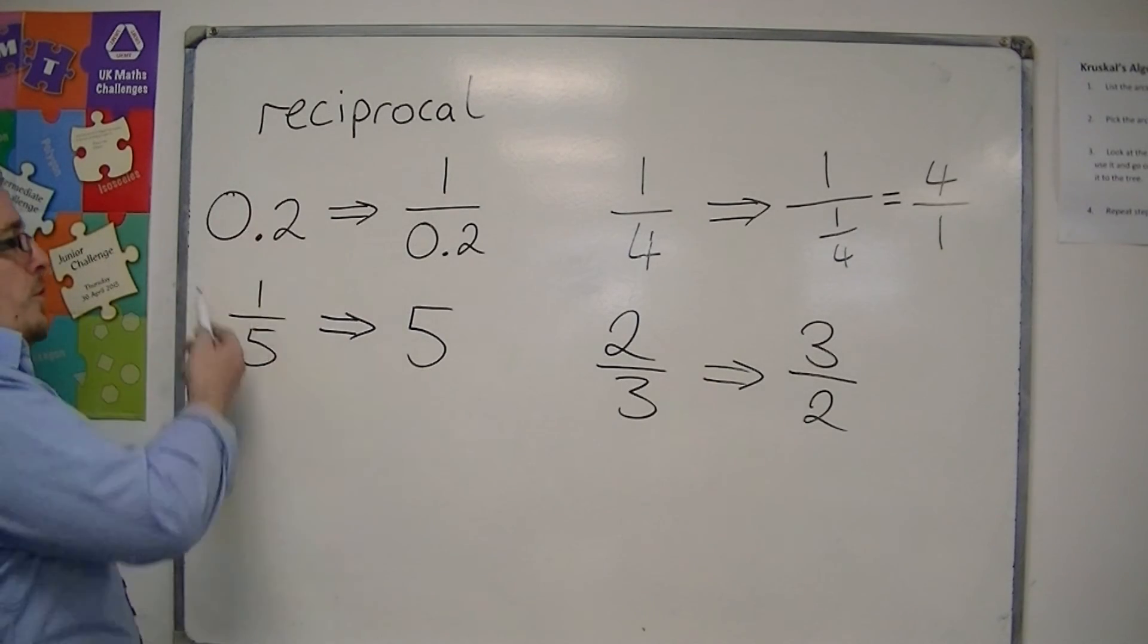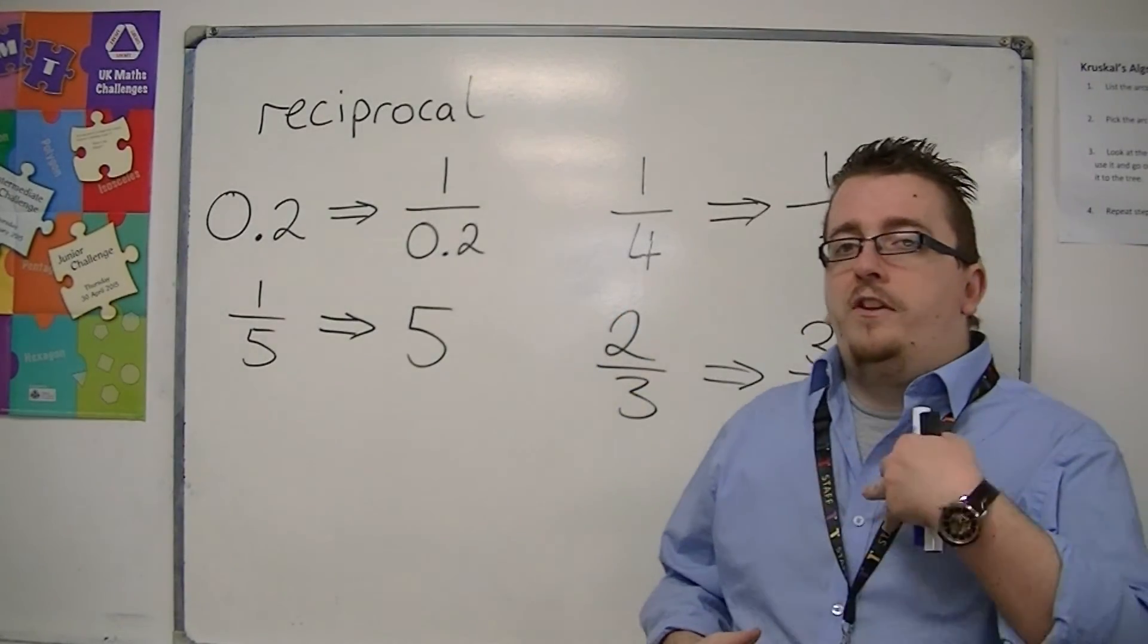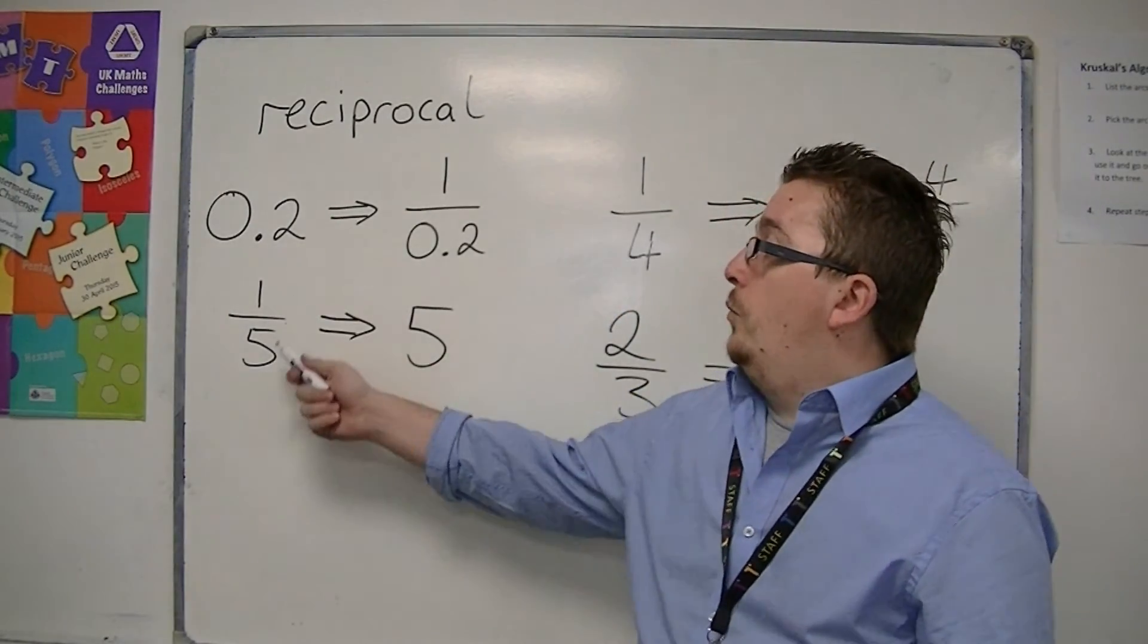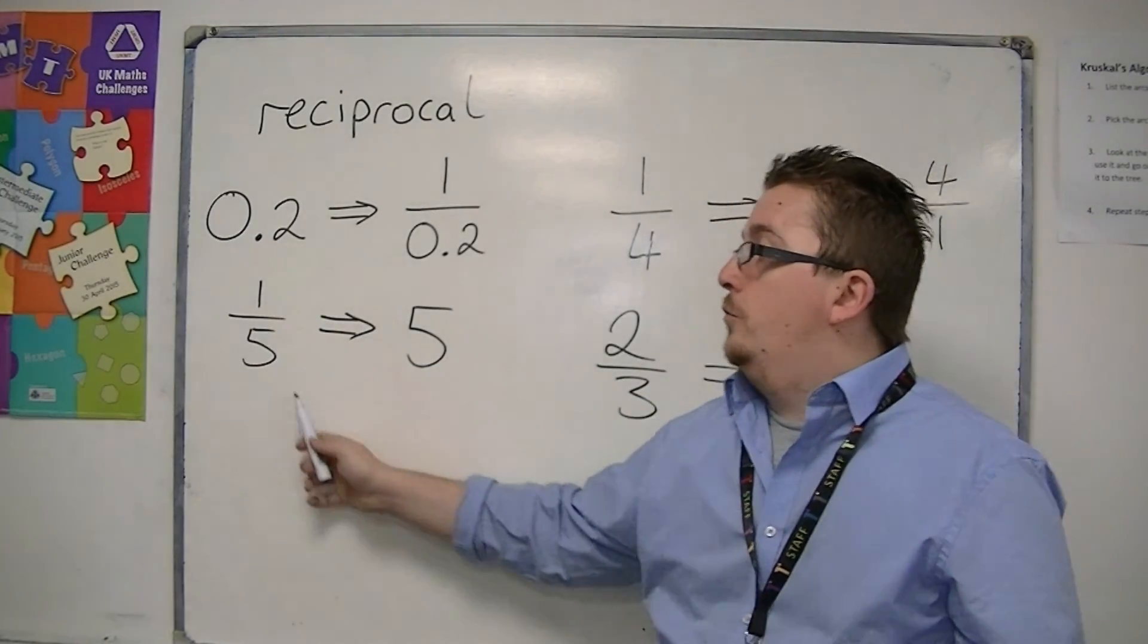So if you've got a question that asks you to write down the reciprocal of 0.2, it's best to know that 0.2 is 1 fifth as a fraction, and then the reciprocal of 1 fifth would be 5.